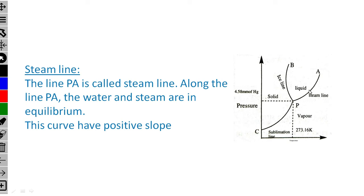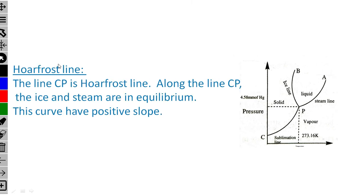The third line is the hard-frost line or sublimation line. The line CP is the hard-frost line. Along the line CP, ice and steam — that is, solid and vapor — are in equilibrium; it is the boundary between solid and vapor. This curve also has a positive slope, meaning temperature and pressure both increase together.